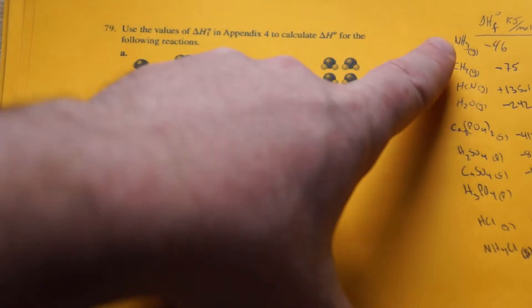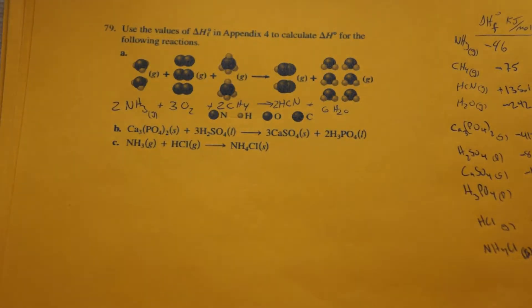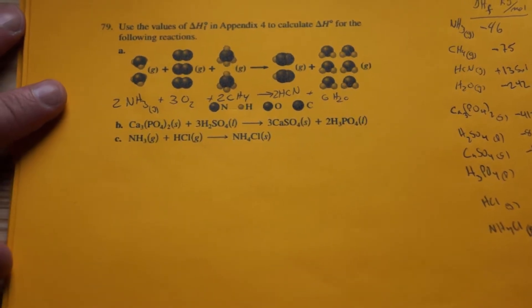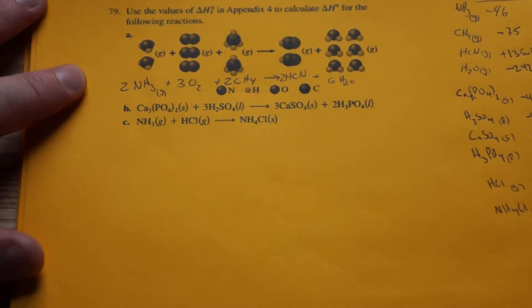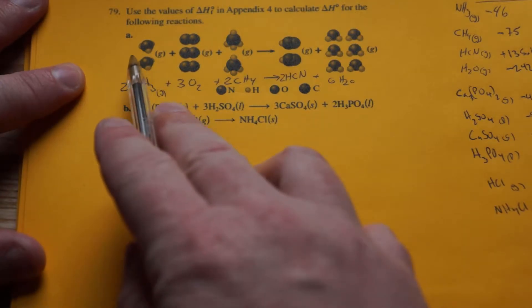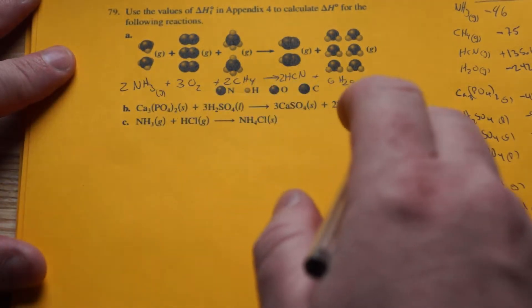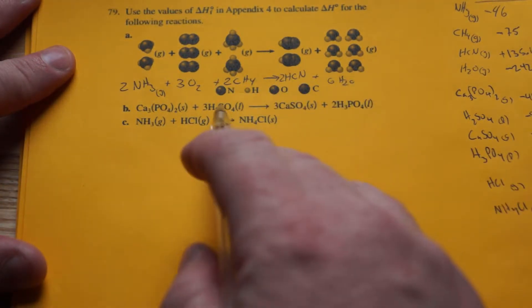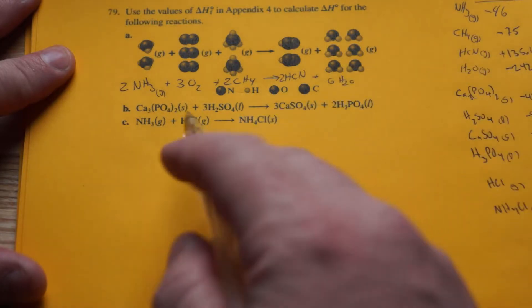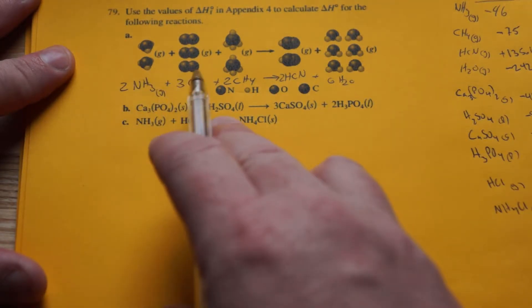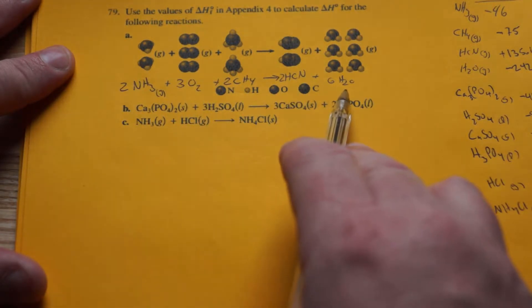I already looked up in the back of the textbook all the values I need for number 79, so we can expedite this video. For 79, they give you a bunch of diagrams of compounds. You have to figure out what they are. So the first step is to write down the actual reaction.